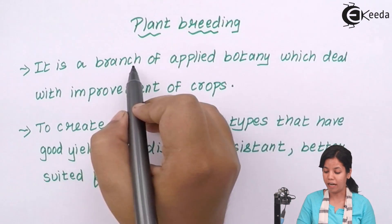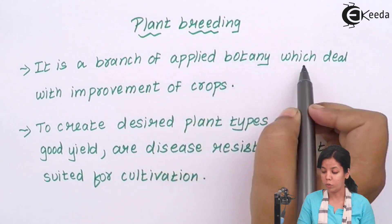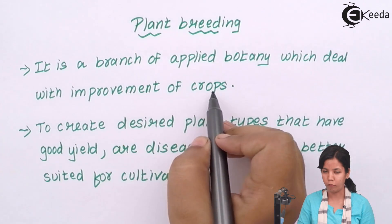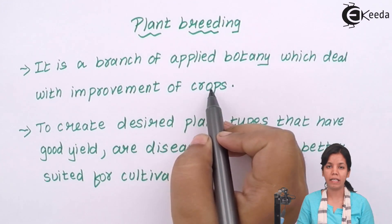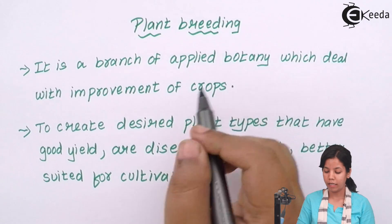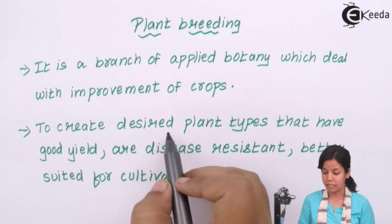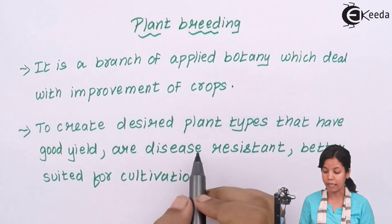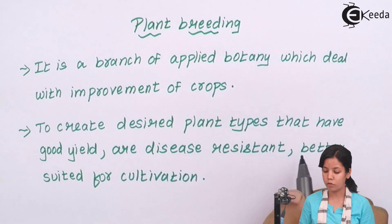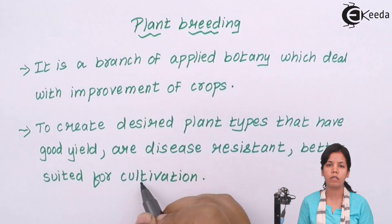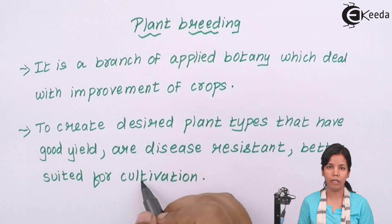Plant breeding is a branch of applied botany which deals with improvement of crops. It is a process or method used to increase the content or yield of a plant. It creates desirable plants that have good yield, are disease resistant, and are better suited for cultivation. The main focus is that the plant variety has to be better than the original or previous variety in terms of quality, quantity, as well as resistance power.